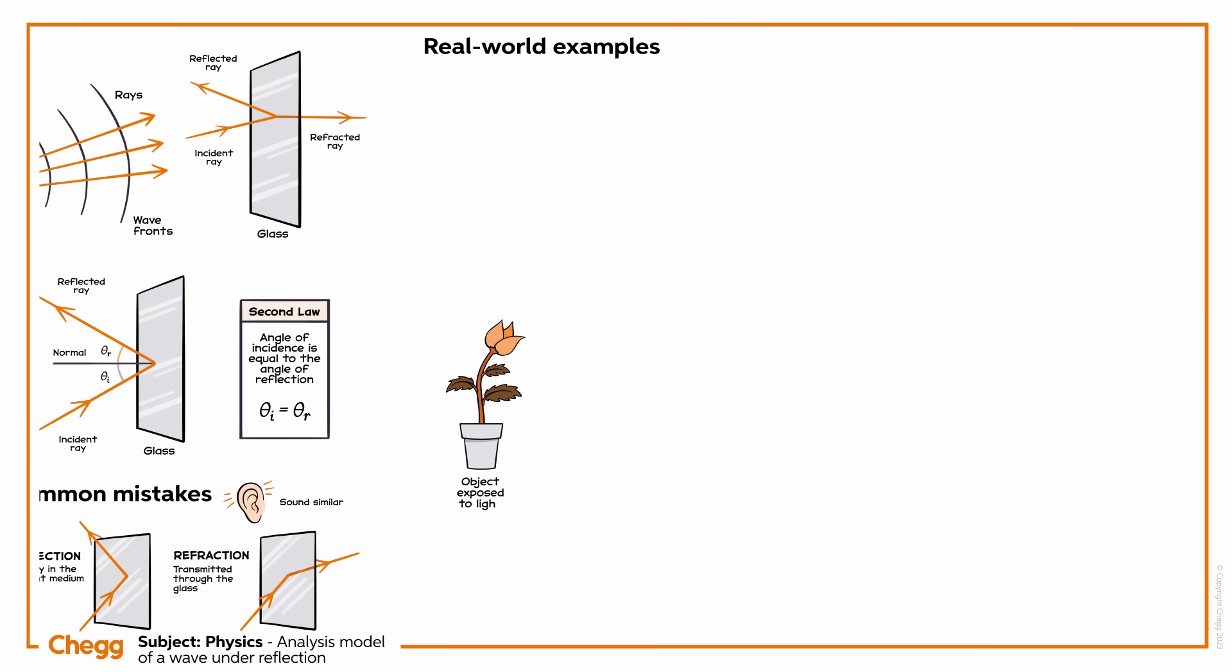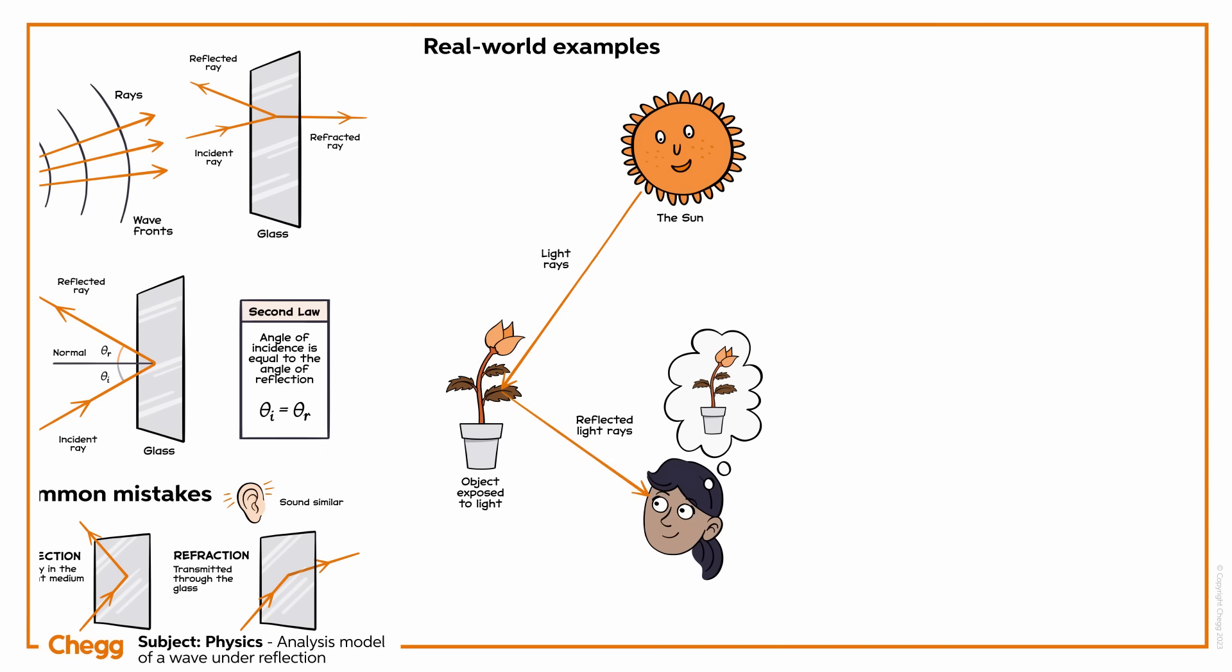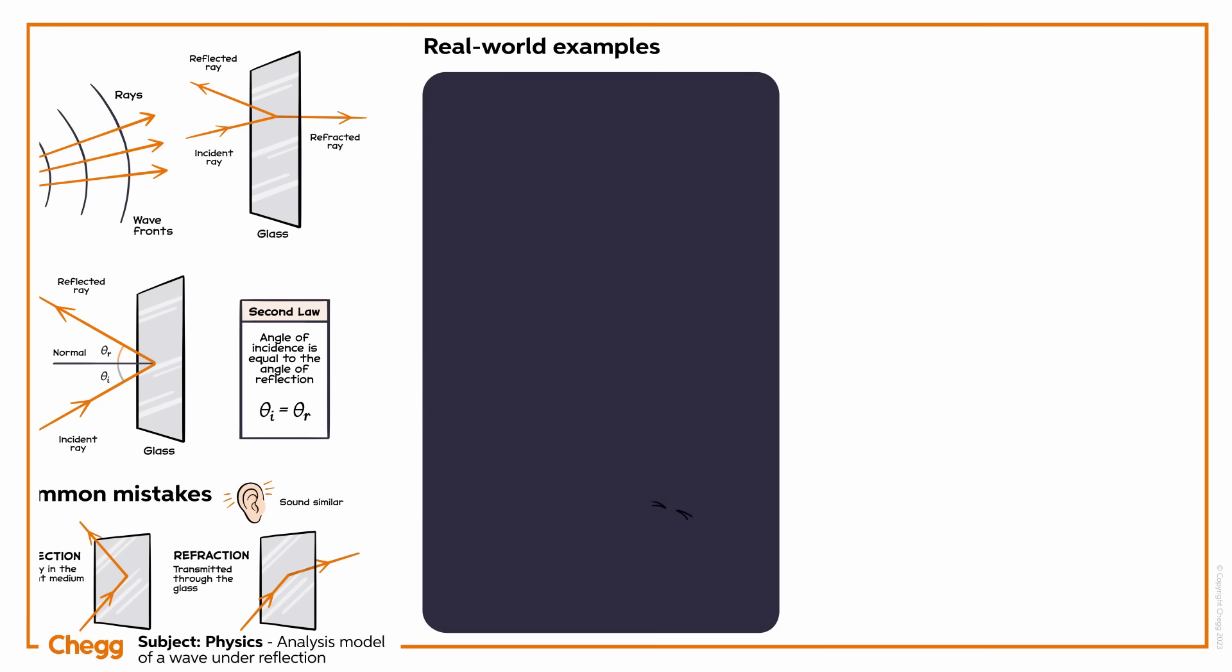Consider an object exposed to light from a luminous object, which emits light on its own like the sun. Then the light rays from the luminous object fall on the object and get reflected from the object. When these reflected rays from the object reach our eyes, we can see the object. This is the reason why we cannot see objects in darkness, as there is no light that can be reflected from the object.